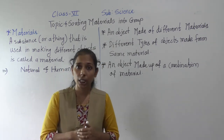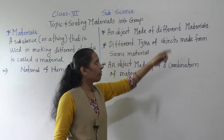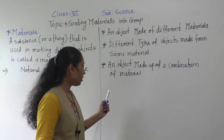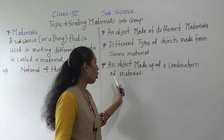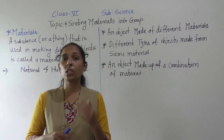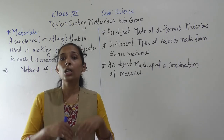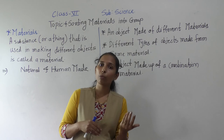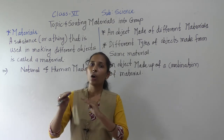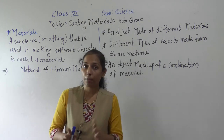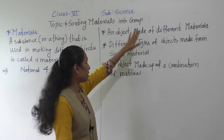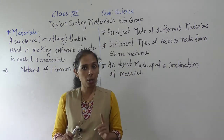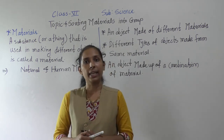To summarize today's discussion: first, an object can be made up of different materials; second, different types of objects can be made from the same material; and third, an object can be made up of a combination of materials. We should also study the properties of materials to understand which material is used to make a particular object. That's all for today — we will meet in the next video with the next point. Goodbye and thank you.